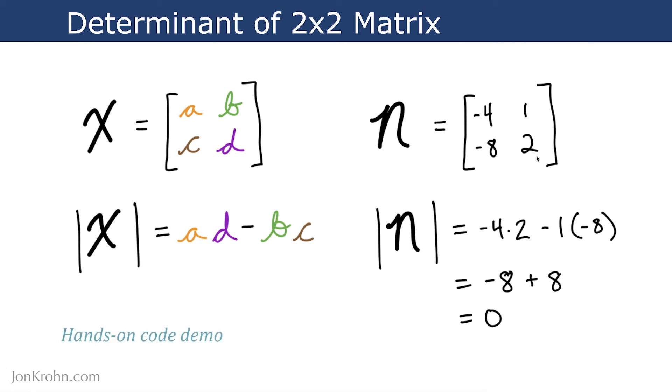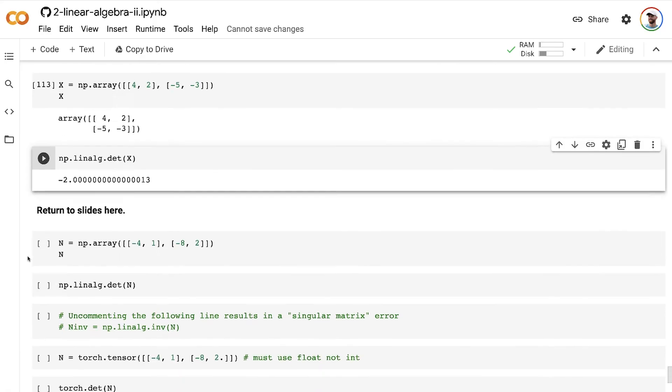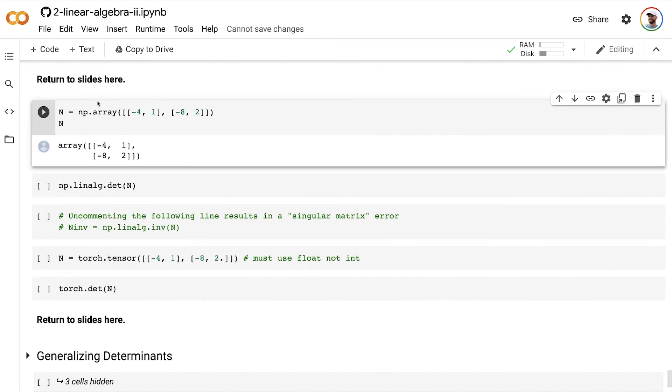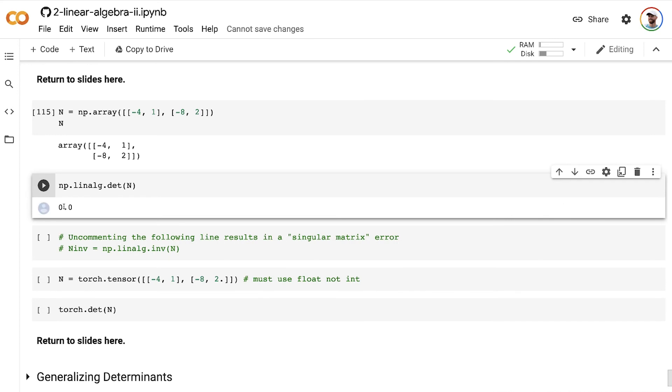So what happens in code when we calculate the determinant or try to invert a matrix like this? Let's have a look. So here now we have our matrix N from the slides.